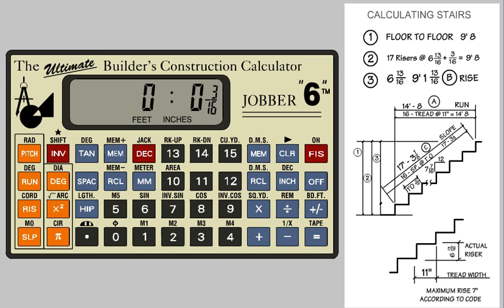So, to find the stair-run dimension, we multiply the tread width, which is 11 inches, by the number of treads, which is 16. Enter 11 inches. Multiply by 16 spaces. Equals. This is our stair run, so let's enter it in the triangle run. This is our dimension A.